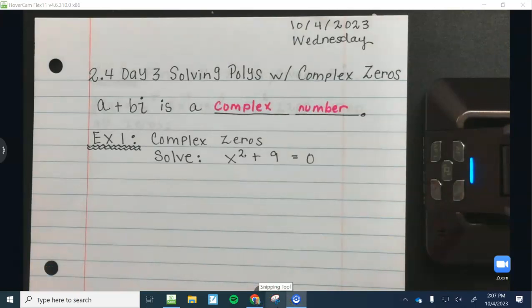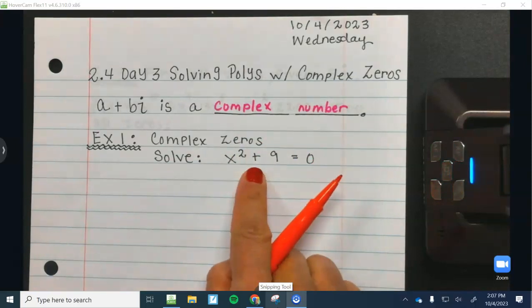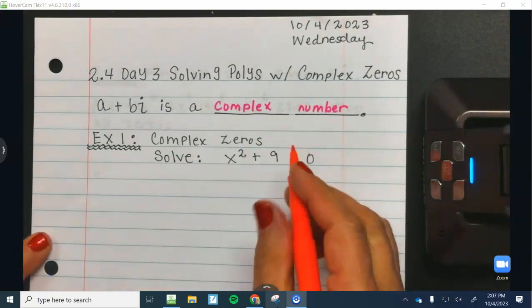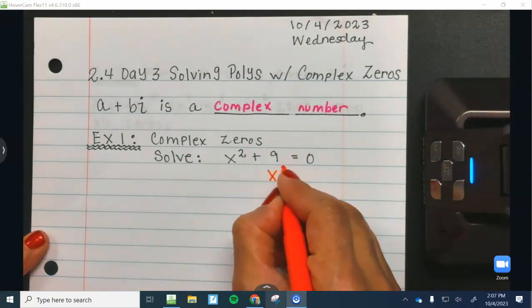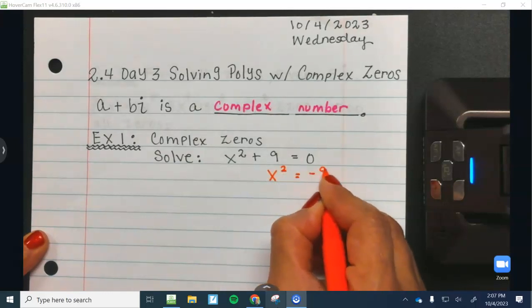So to solve it, I would try to factor. Of course, it's a sum. I can't factor that. So let's move the 9 over. So we're going to have x squared equals negative 9.